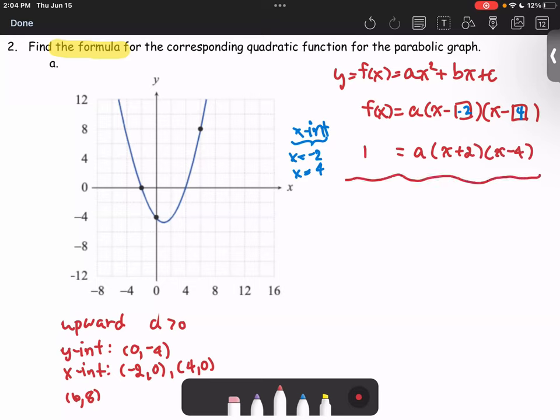Next, we're going to use the y-intercept. The y-intercept is where x is 0 and y is -4. We get -4 equals a times (0 + 2) times (0 - 4).